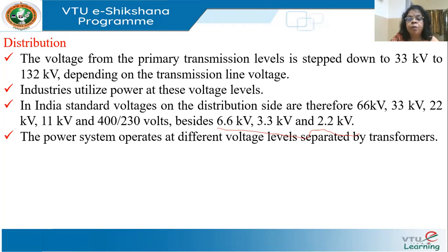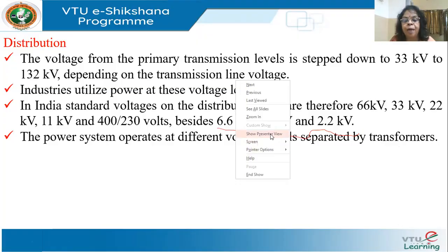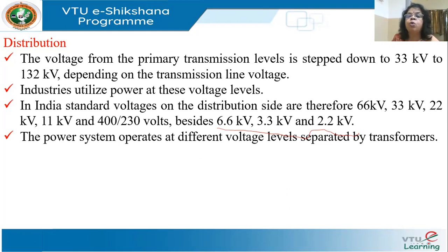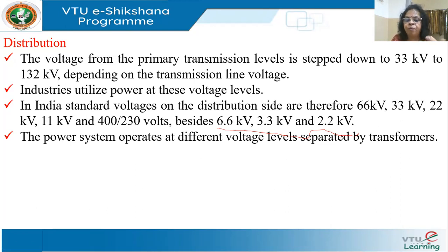The power system operates at different voltage levels, separated by transformers of different ratings. In India, the transformers you see on roadsides are normally 11 kV to 415 volts. These transformers are normally three-phase, and we will see how from three-phase you get single-phase as we progress through the unit.